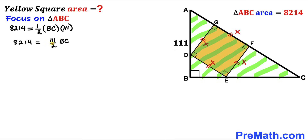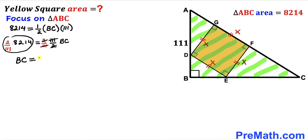Multiplying both sides by 2 divided by 111 to isolate BC, the 111s and the 2s cancel. Simplifying the left-hand side gives us BC equals 148. So this side length BC turns out to be 148 units.